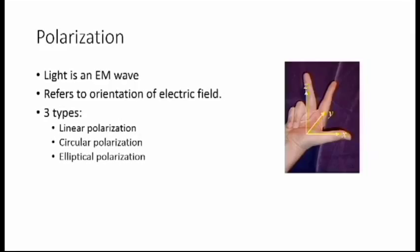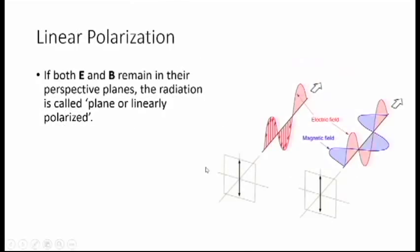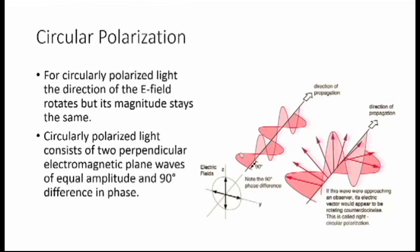Polarization can be of three types: linear polarization, circular polarization, and elliptical polarization. Out of these three, linear polarization is the simplest one. If the electric field remains in its respective plane, the radiation is called linearly polarized. For linear polarization, the electric field does not actually rotate — it stays in the same plane.